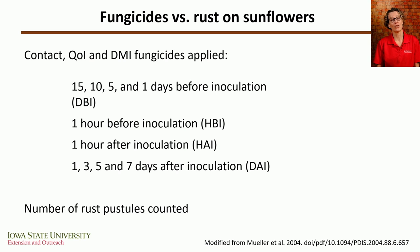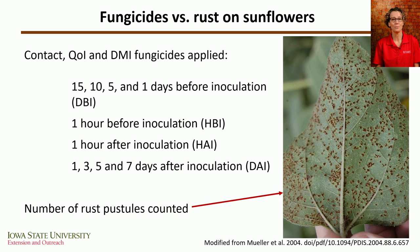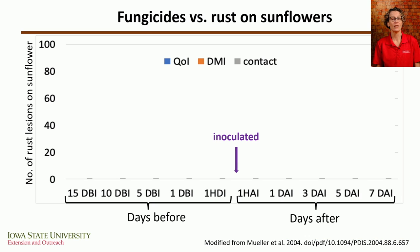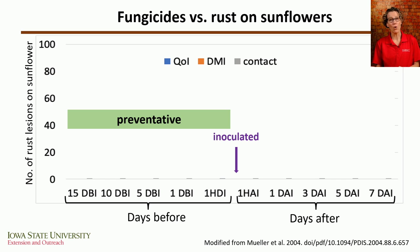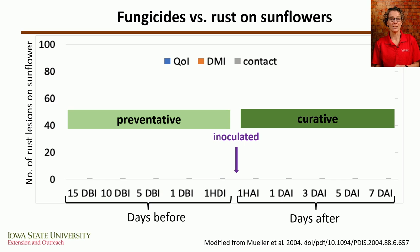The chart shows the number of rust lesions on the vertical axis, and on the x-axis, the days before or after inoculation. If a fungicide sprayed before inoculation protects against disease, it has preventative activity. If sprayed after inoculation and it prevents disease, it has curative activity. With a contact fungicide, we significantly decreased rust disease when applied before inoculation, but if applied one day or more after inoculation, it had no effect.